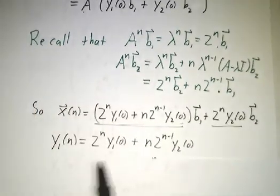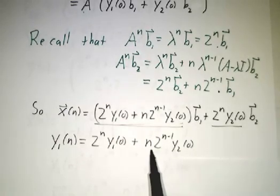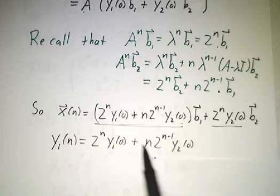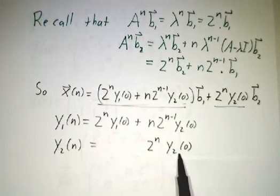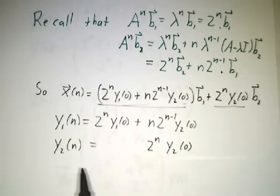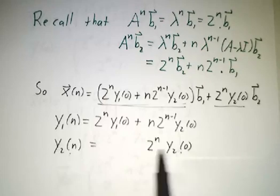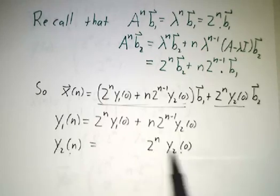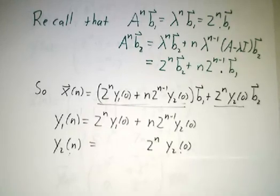In other words, y1 at time n is 2 to the n times y1 at time 0, plus a piece that comes from y2 at time 0. y2 at time n is just 2 to the n times y2 at time 0. So it's partially decoupled. You can solve for y2 at the end by just taking y2 at the beginning and multiplying by 2 to the n. You don't need to know about y1. But to solve for y1, you do need to know about y2.